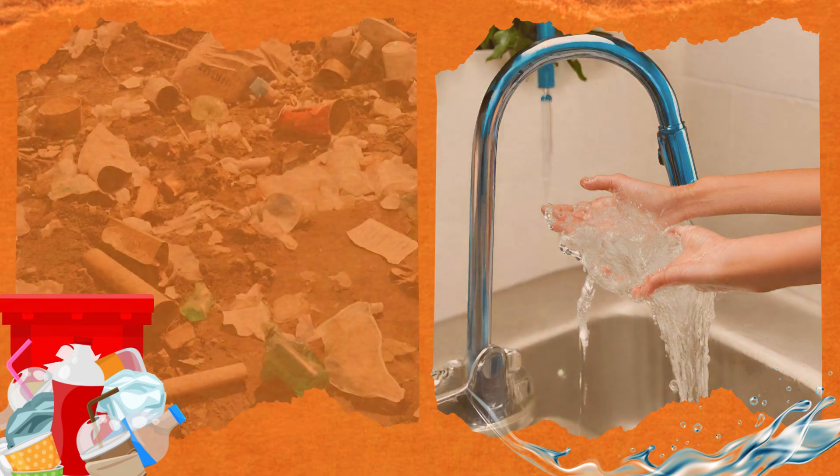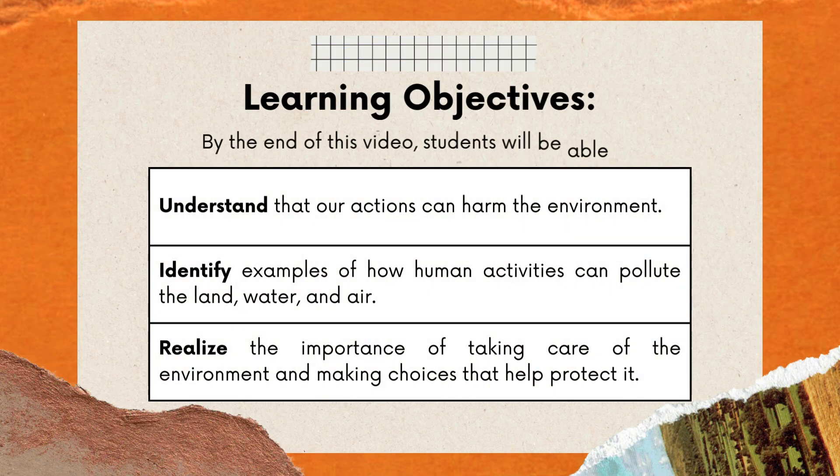By the end of this video, students will be able to: understand that our actions can harm the environment; identify examples of how human activities can pollute the land, water, and air; and realize the importance of taking care of the environment and making choices that help protect it.